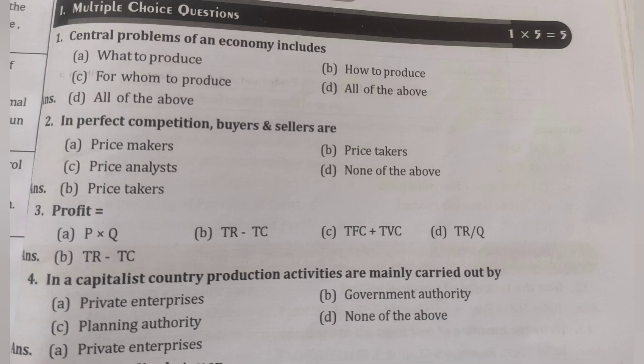Central problem of an economy includes all of the above. In perfect competition, buyers and sellers are price takers, not price makers. Profit = Total Revenue − Total Cost. In a capitalistic country, production activities are mainly carried out by private enterprises. These are important questions which have been asked frequently and might be asked in your examination as well.